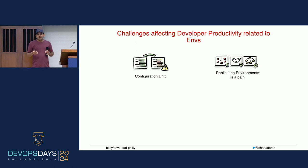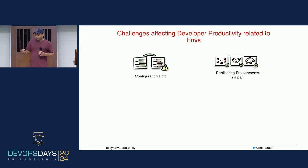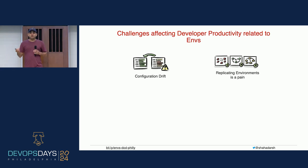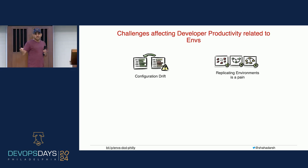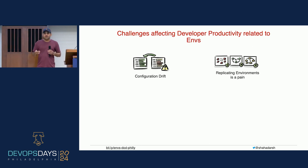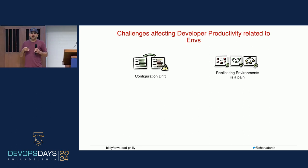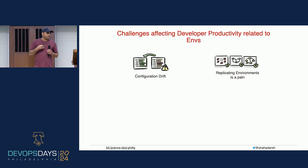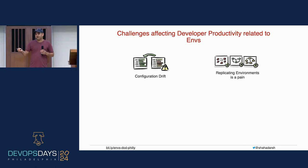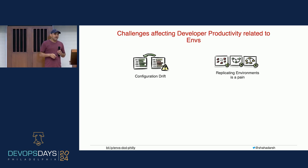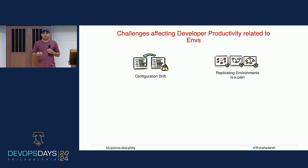The second challenge is that replicating environments is a pain. If you have an issue in production and you want to troubleshoot, you can't just make changes in production or try out fixes. You want to have a production-like environment. If it's an easy enough setup, you can replicate environments — including data in some cases — and reproduce the issue, troubleshoot, and even have a fix.